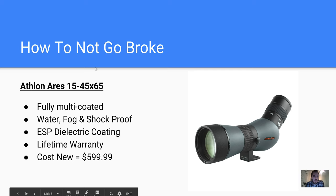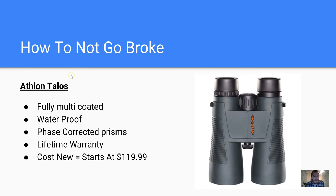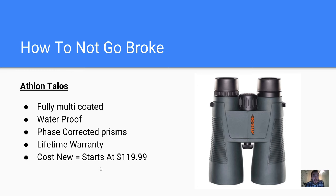For spotting scopes, which can cost $1,500 to $2,000, the Athlon Aries is really good — I have a product review available. I personally own the 15-45x65 model; it's fully multi-coated with a lifetime warranty and comes in at around $600, which is fantastic compared to higher-end options. For binoculars, the Athlon Talos starts at about $120 and comes in five different magnification selections — also fully multi-coated.